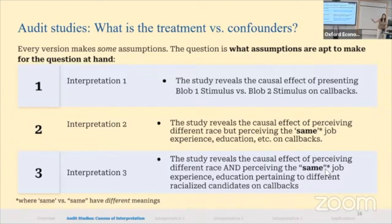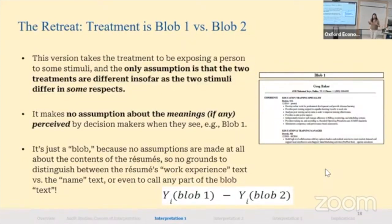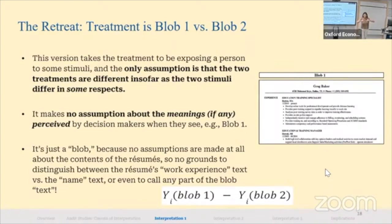The retreat: the study is a study of presenting stimulus one — blob one — versus stimulus two — blob two — on some behavior like callbacks. The only assumption made is that the two different treatments are different insofar as the stimuli are different. There are no assumptions about the meanings attached to the stimuli. Proper treatment here doesn't even require that the resume reader internalize a particular kind of information — I'm not even assuming the resume reader reads the resume.